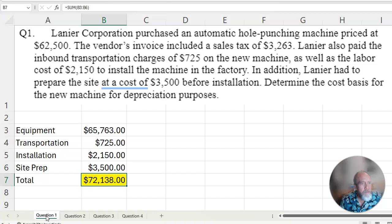We've got a sales tax, transportation charge, labor cost, and a cost of site installation. They want to know what the cost basis for depreciation will be. Basically, depreciation is either legal for depreciation or it's not. Well, everything in this list right here was legal for depreciation.